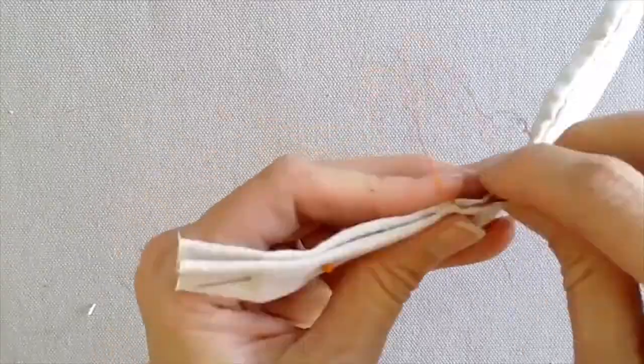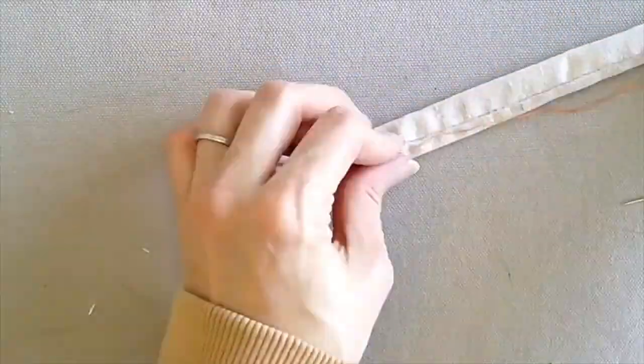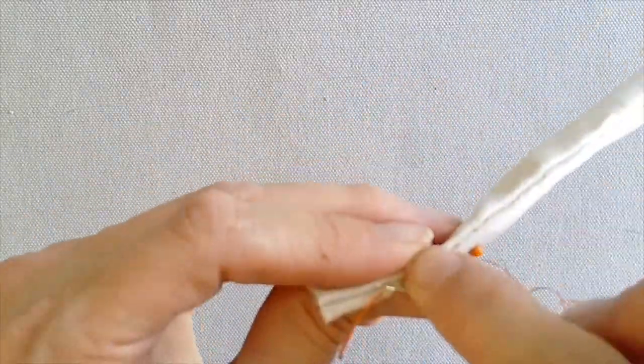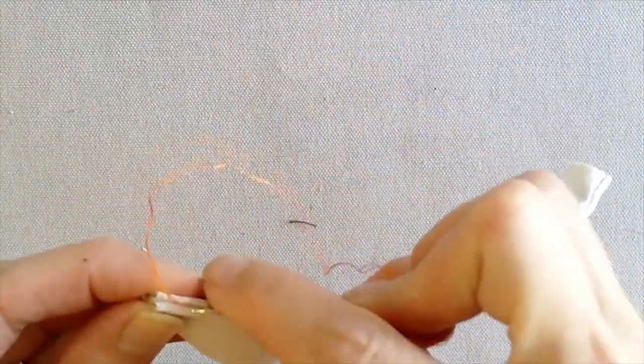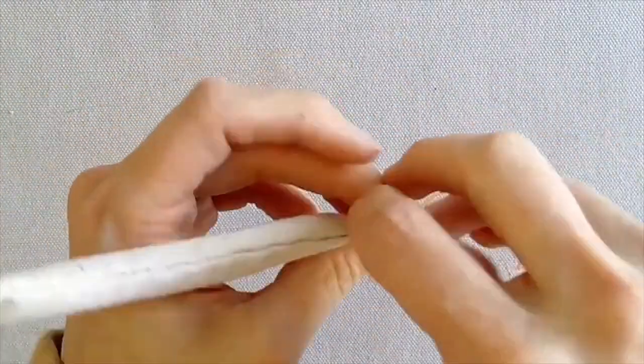When the entire seam is blind stitched, turn the fabric around and stitch backwards five times, continuing the blind stitch backwards. Then flip the fabric around forwards and stitch five times.